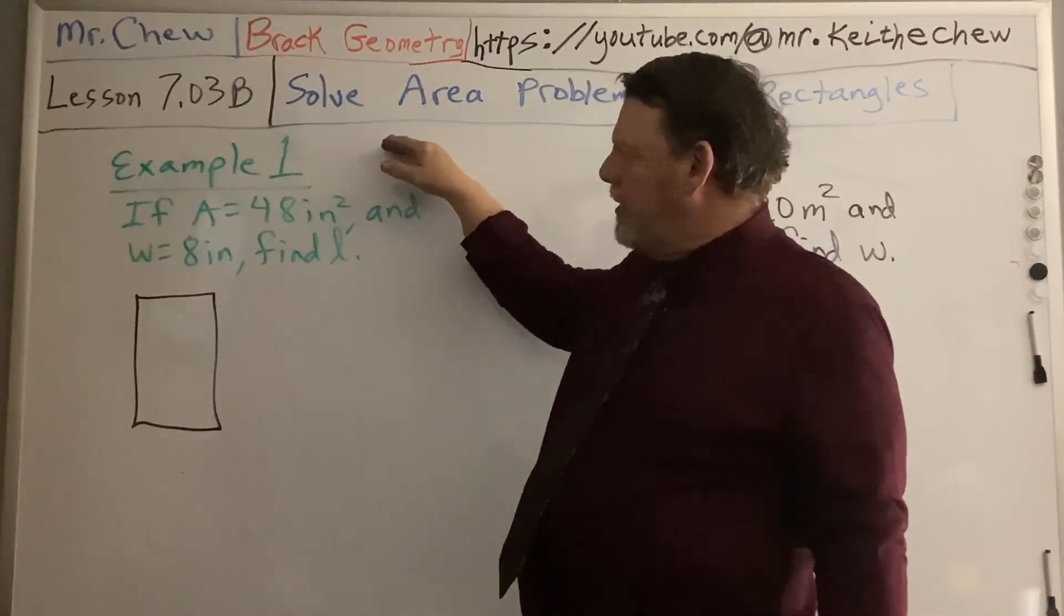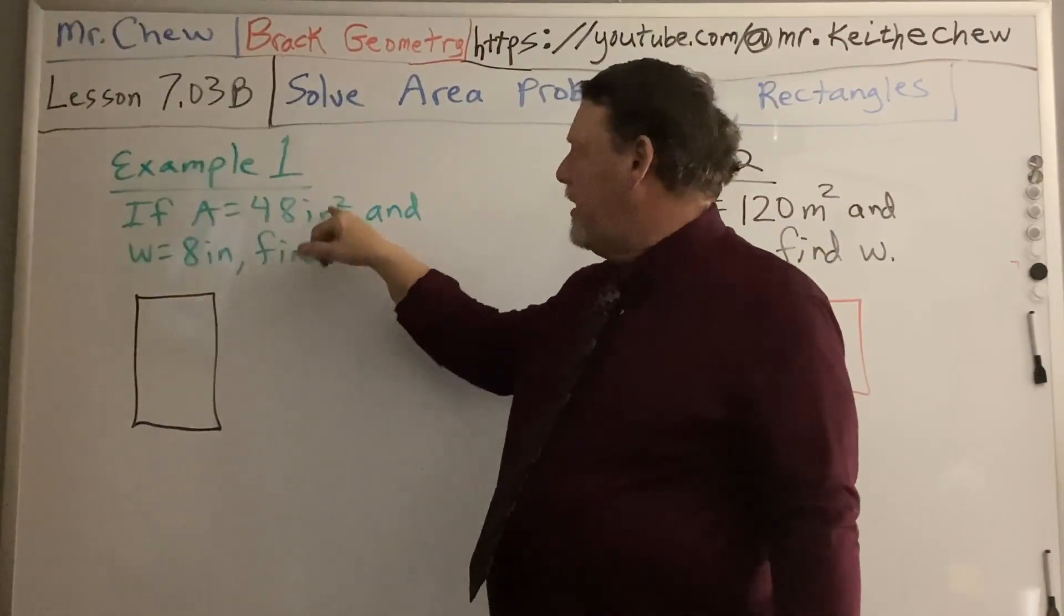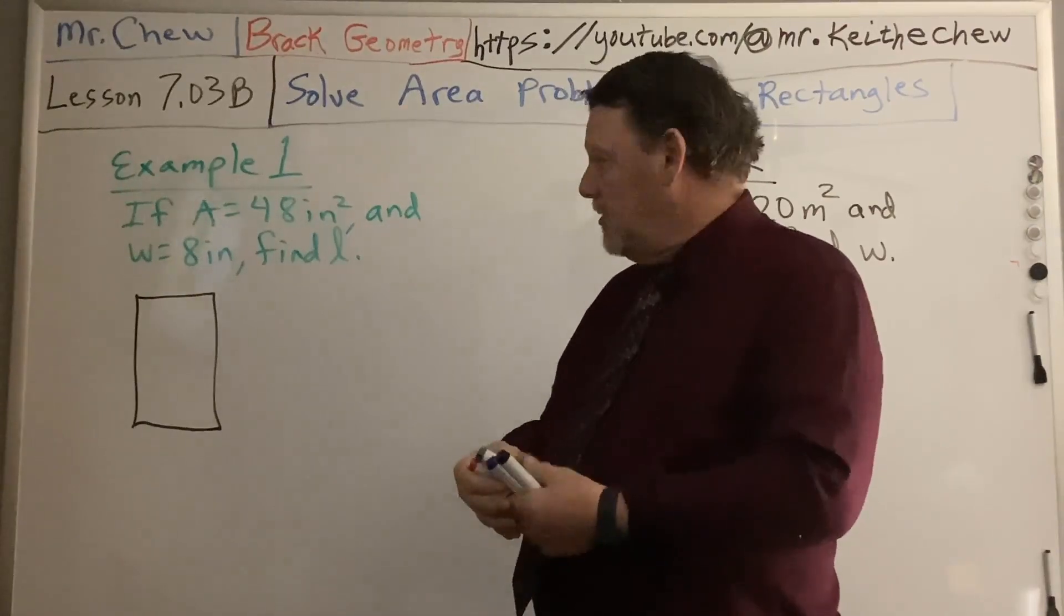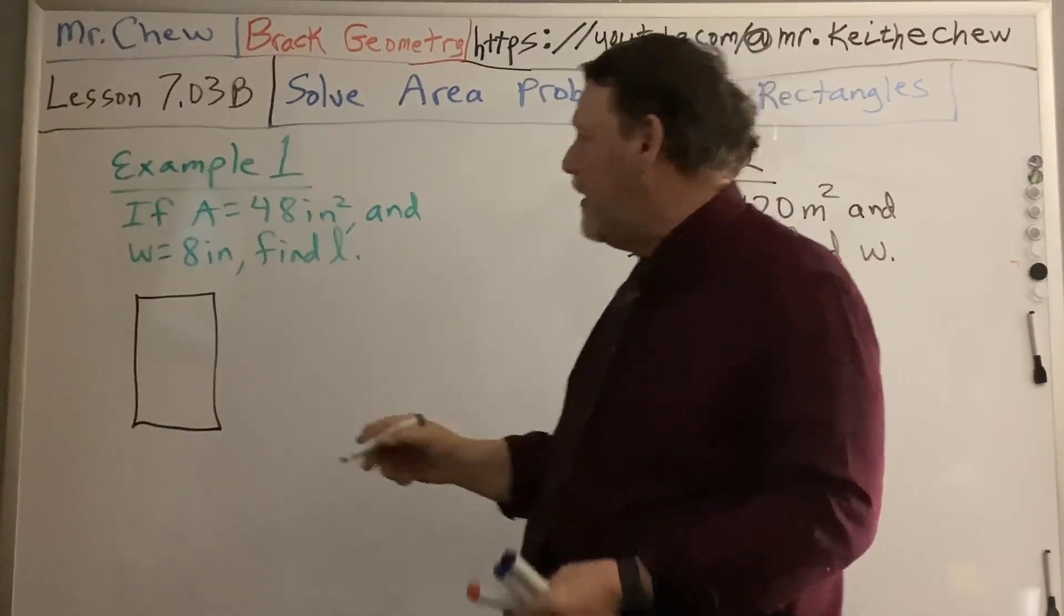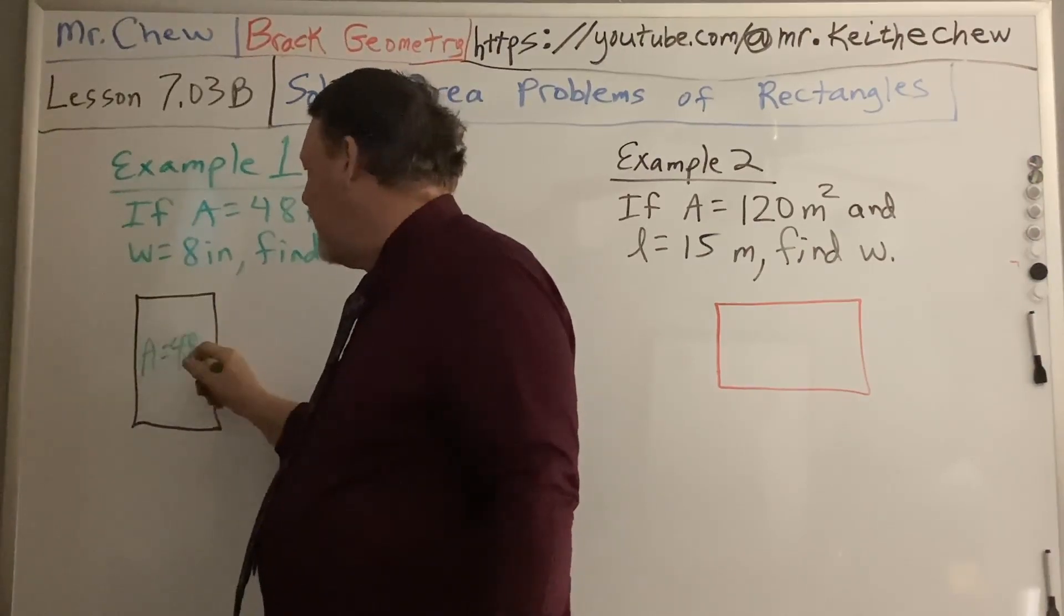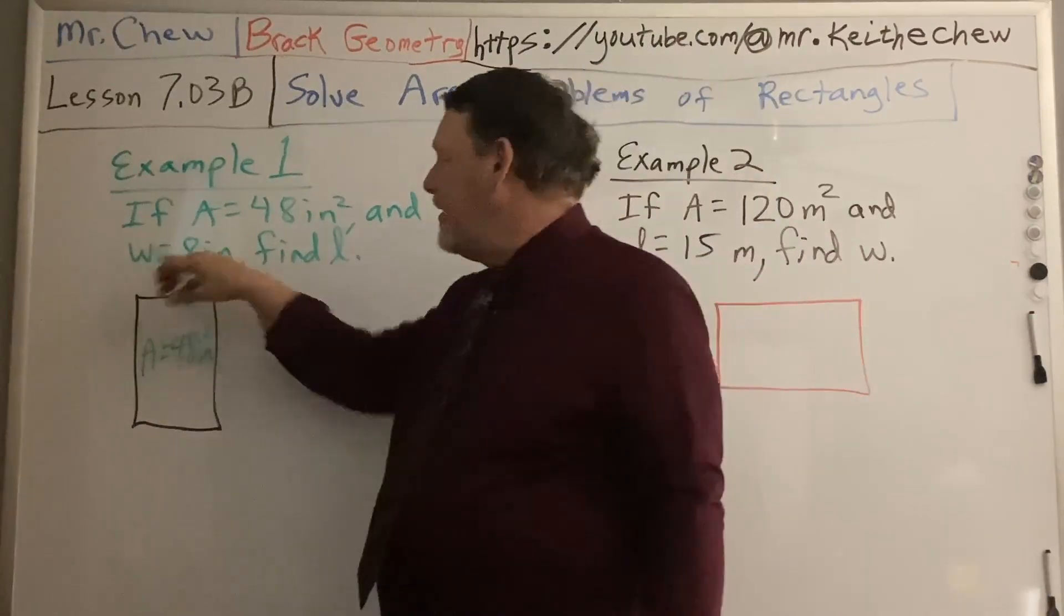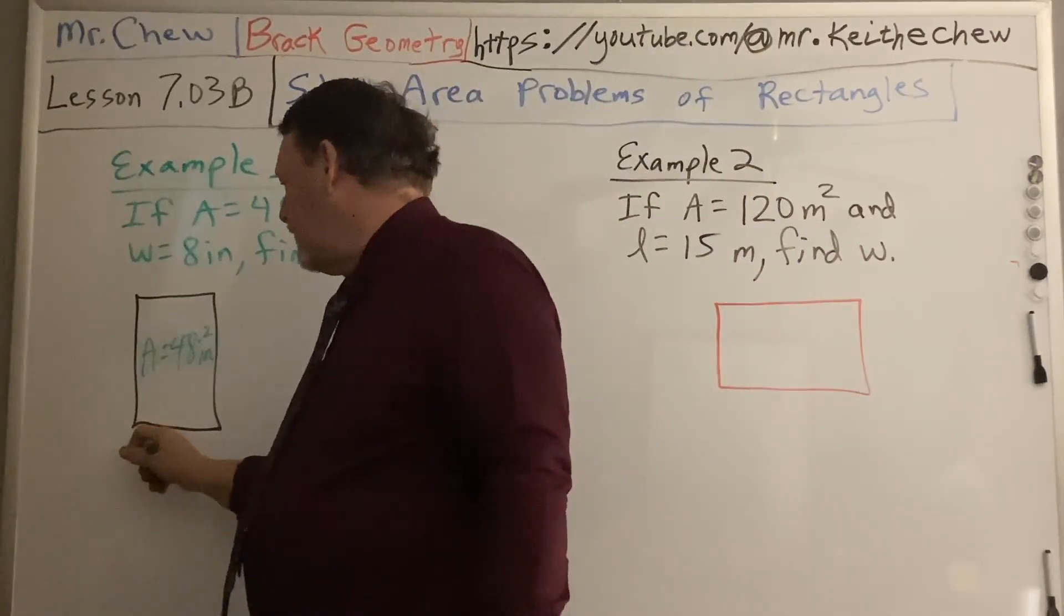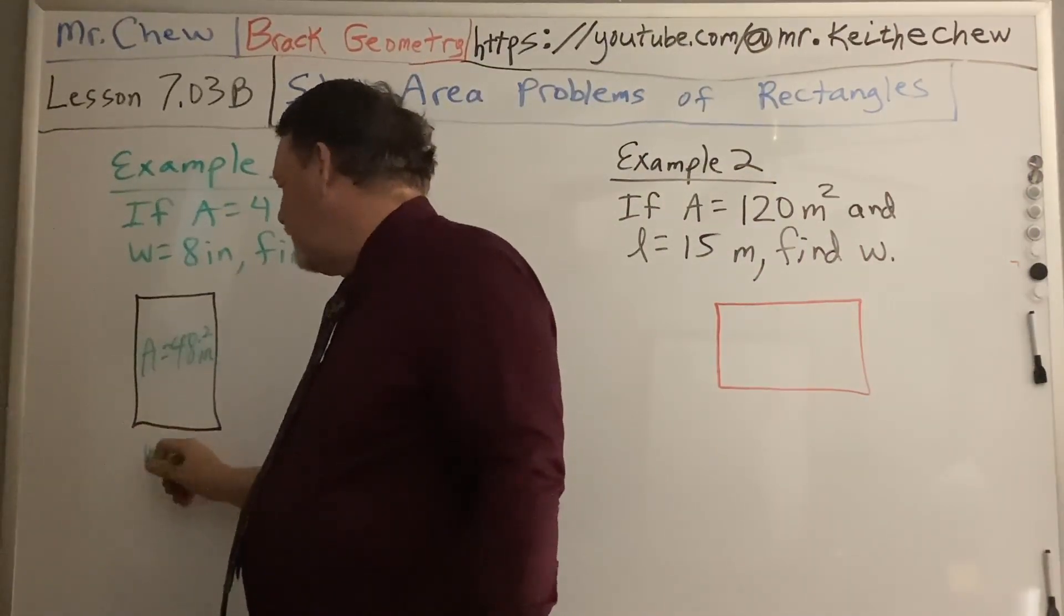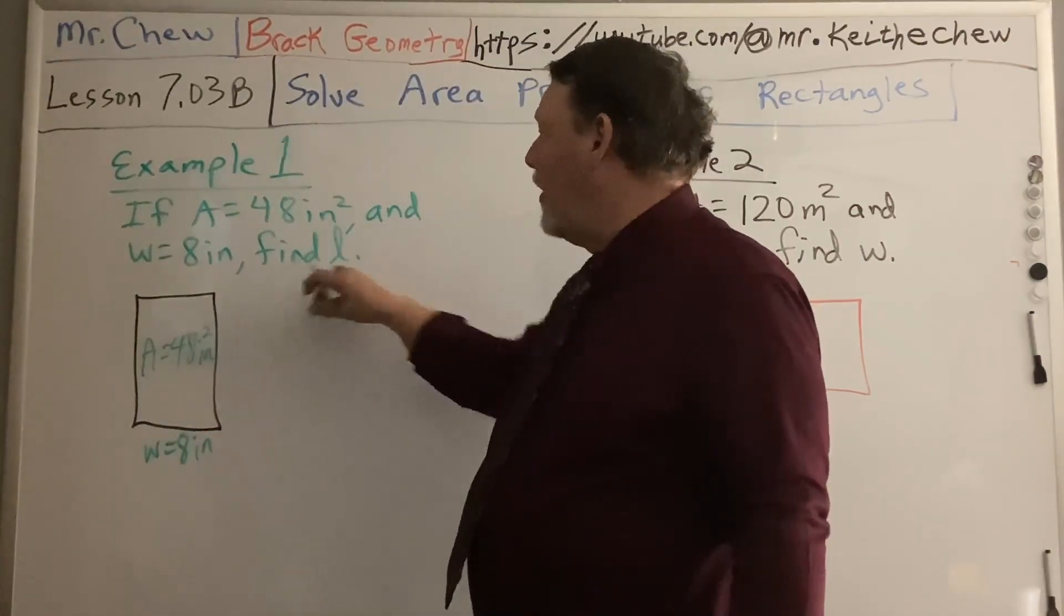So in example one, it says if the area of this rectangle is 48 inches squared, so I can actually write it in here, A equals 48 inches squared, and the width is 8 inches. It asks you, what is the length?